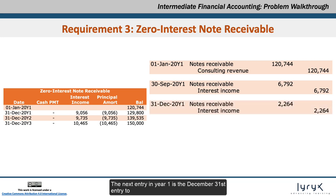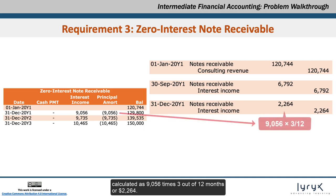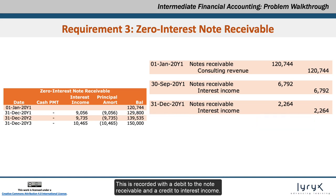The next entry in Year 1 is the December 31 entry to record the remaining 3 months of interest up to December 31, calculated as $9,056 times 3 out of 12 months, or $2,264. This is recorded with a debit to the note receivable and a credit to interest income.